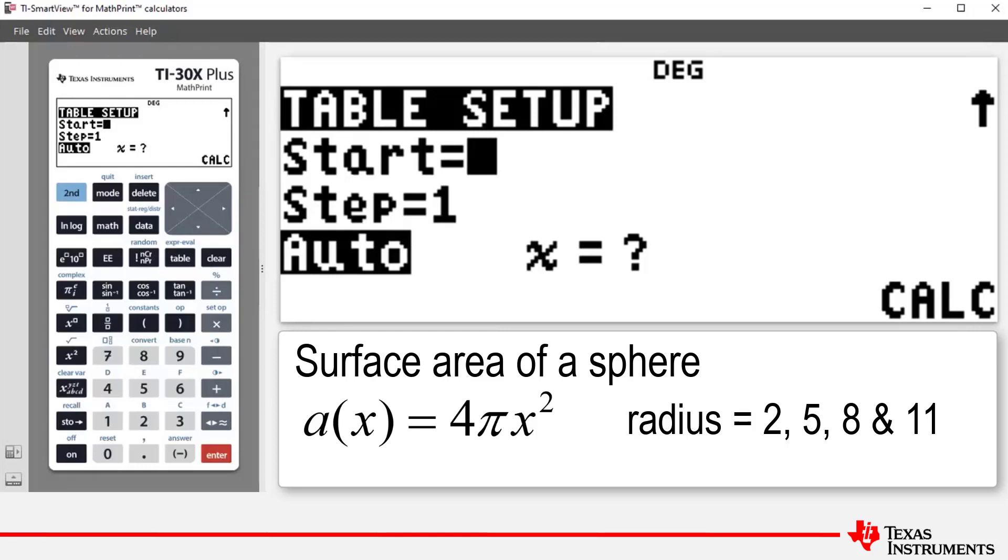So for our example we're going to have a start value of 2, which we enter, then down arrow. Now our radii were 2, 5, 8 and 11, which means our step is 3 and we want the auto feature. So we go and highlight auto, then down again to highlight calc, which is short for calculate.